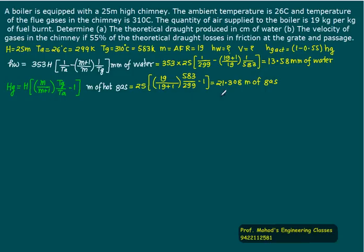This gives 21.308 meters of gas. Since 55% is lost due to friction, the actual available head for hot gas is (1 - 0.55) × hg = (1 - 0.55) × 21.308 = 9.588 meters. So actual draught available is only 9.588 meters.